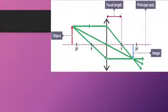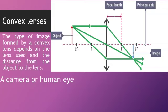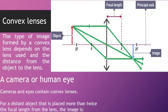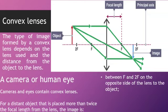Convex lenses. The type of image formed by a convex lens depends on the lens used and the distance from the object to the lens. A camera or human eye. Cameras and eyes contain convex lenses. For a distant object that is placed more than twice the focal length from the lens, the image is between F and 2F on the opposite side of the lens to the object. Inverted, diminished, and real.